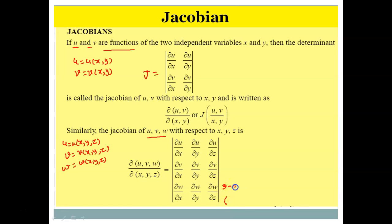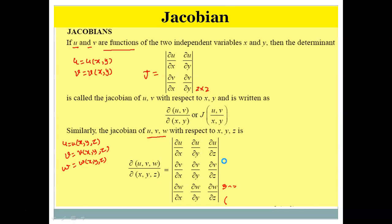In the two-variable case it is a determinant of order 2×2. Similarly, if we have four variables in terms of another four variables, we'll have a determinant of order 4×4. First let us understand why we study the concept of Jacobian and where it can be applied.